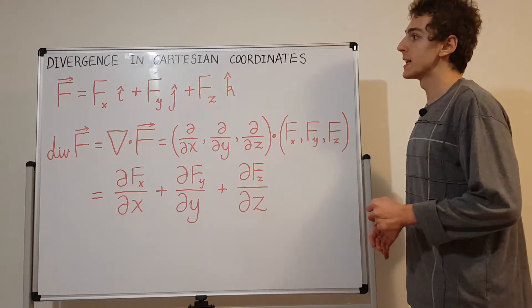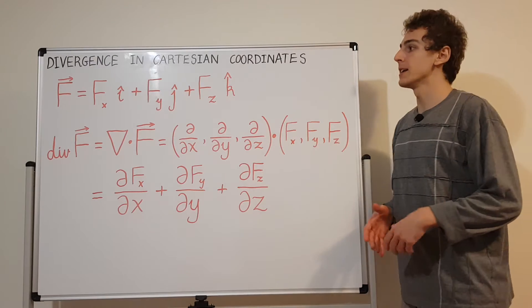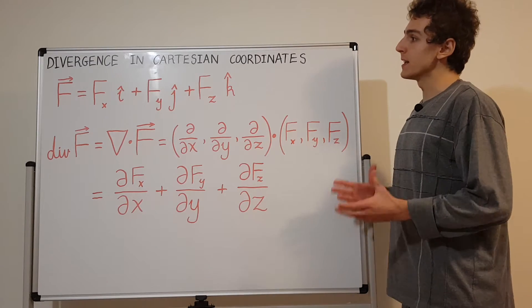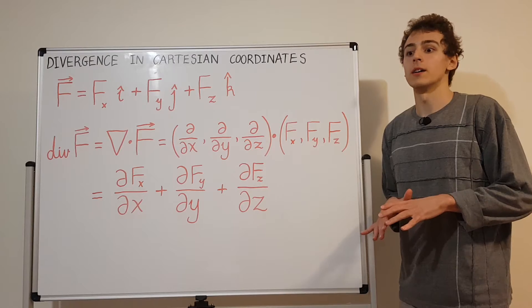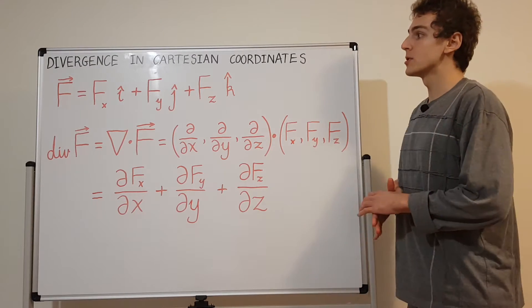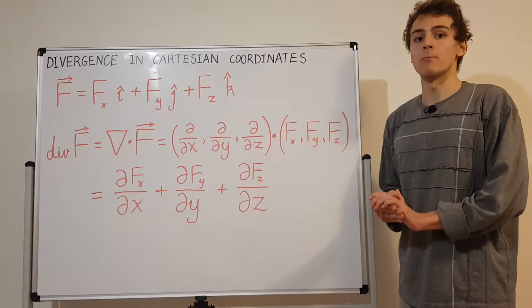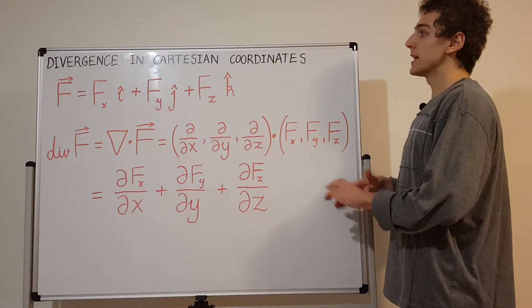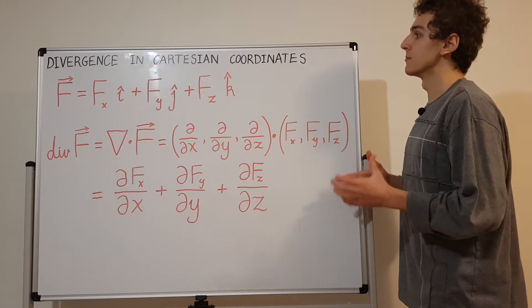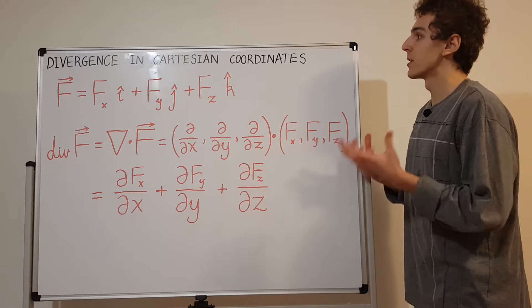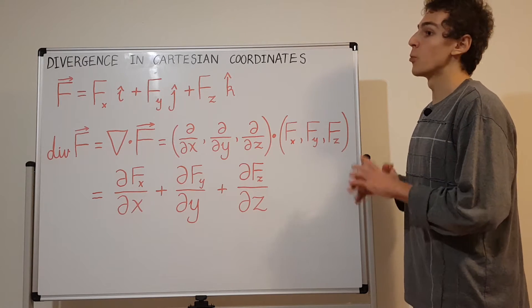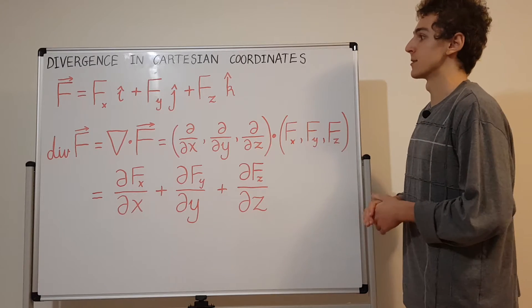You can write divergence in spherical coordinates and in cylindrical coordinates. These coordinate systems are sometimes more convenient to work with because you might have spherical or cylindrical symmetry in your problem. But some of the easiest and most intuitive coordinate systems are well described by the Cartesian coordinate system.